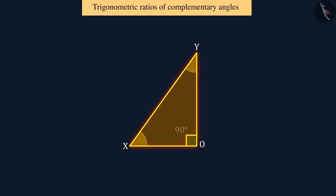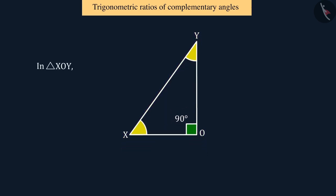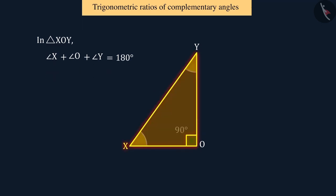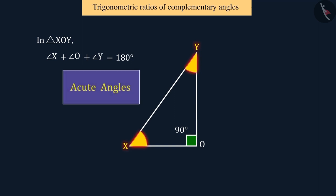Let us now discuss the right-angled triangle XOY. We know that the sum of the three angles of a triangle is 180 degrees. In the triangle XOY, angle O is right angle and both the remaining angles X and Y are acute angles.